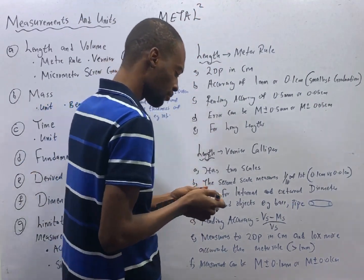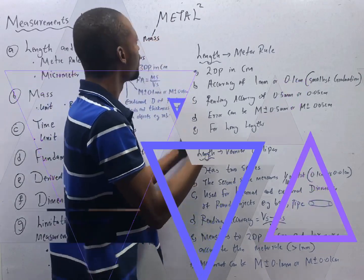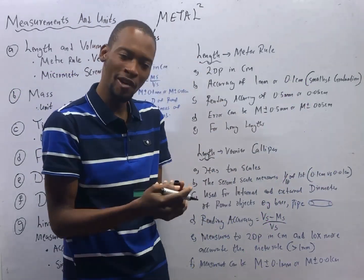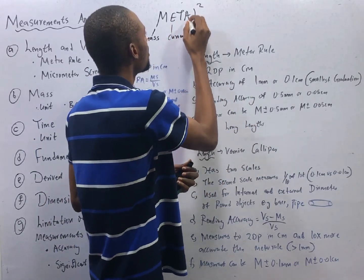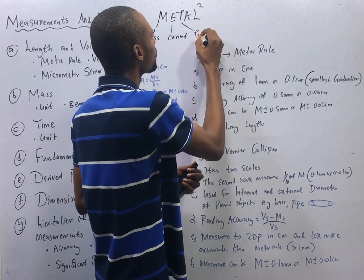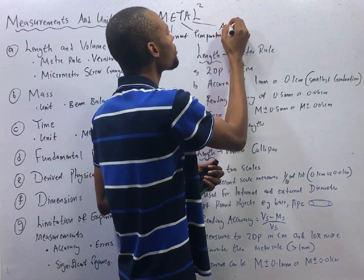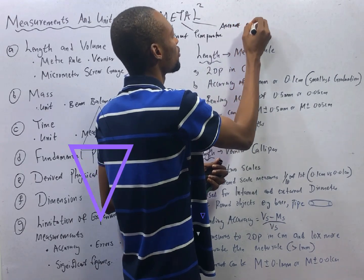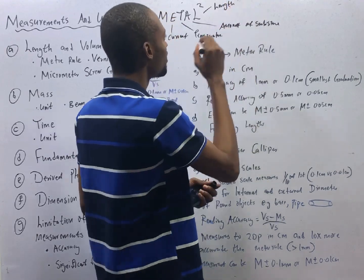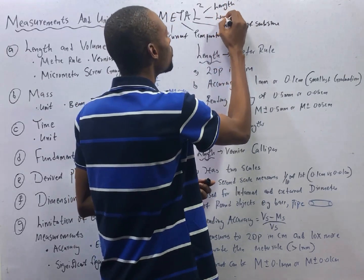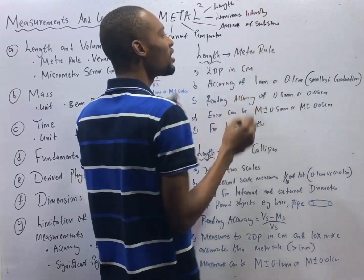The mnemonic is METALL: M is mass, E is electric current, T is temperature, A is amount of substance, and the two L's — one stands for length and the second L stands for luminous intensity, which is measured in candela.